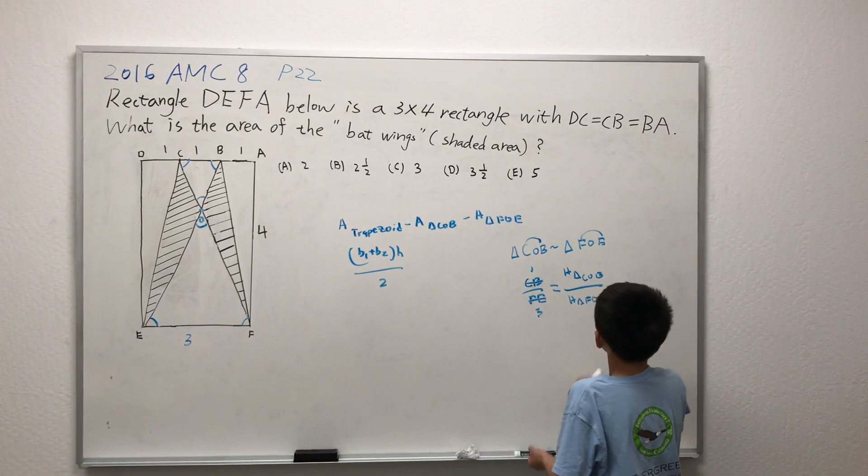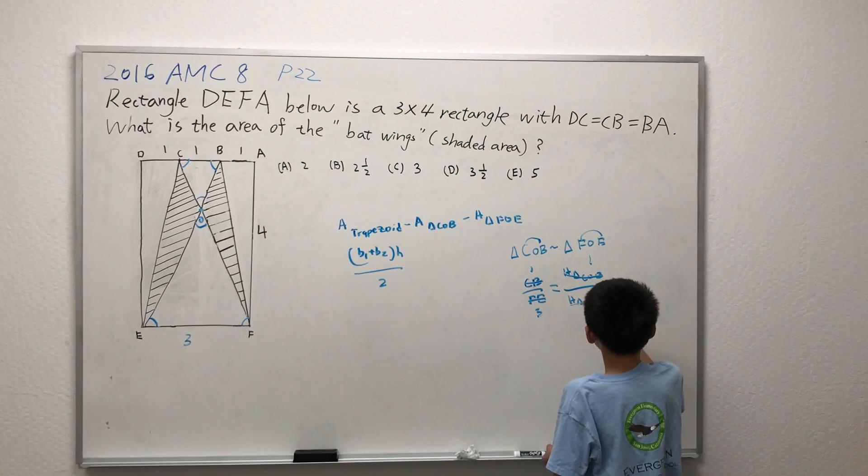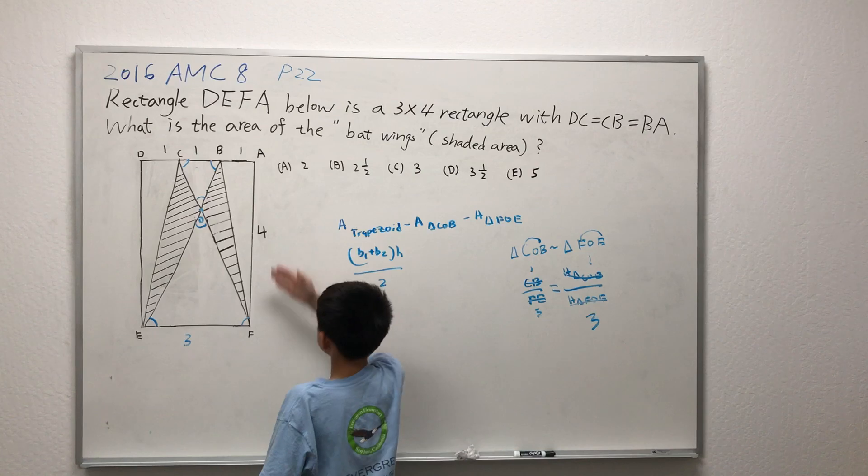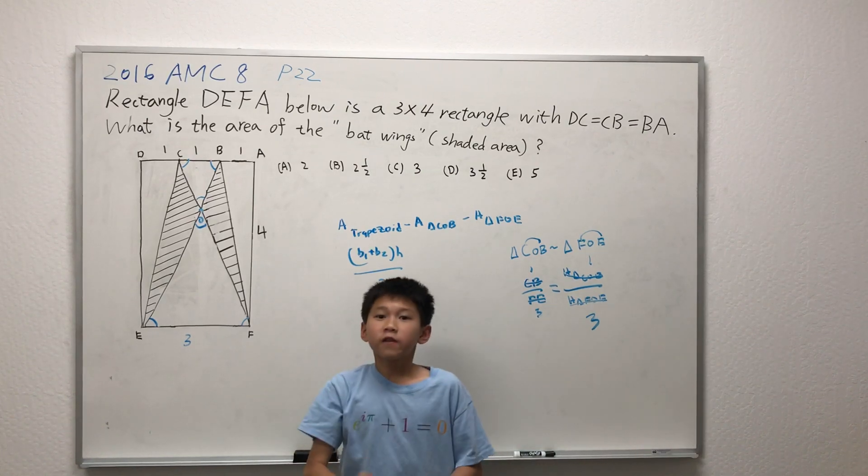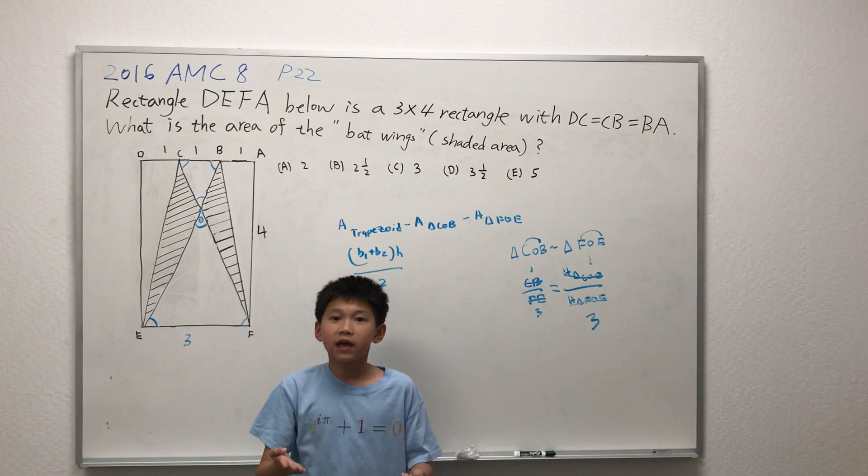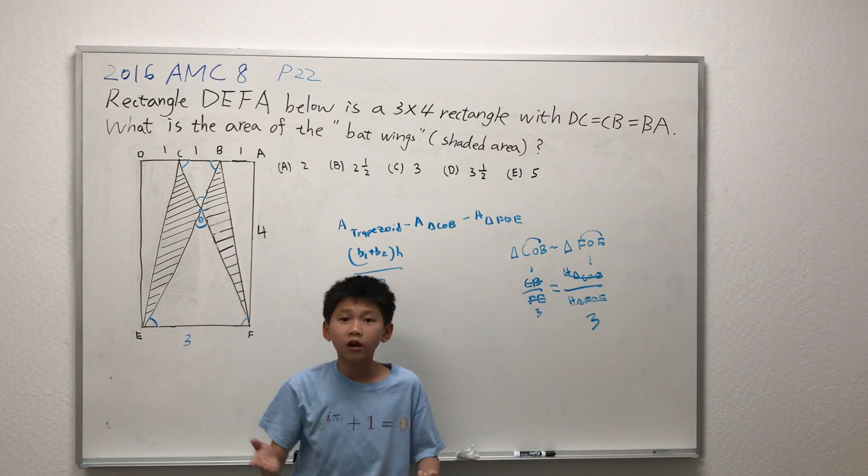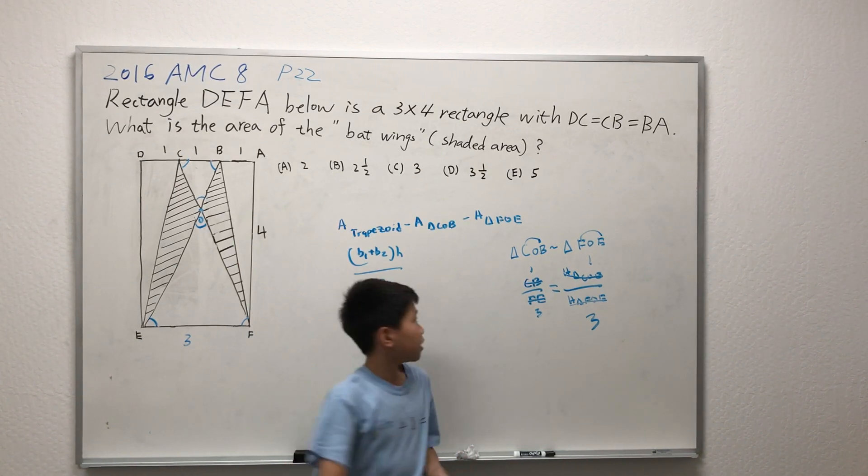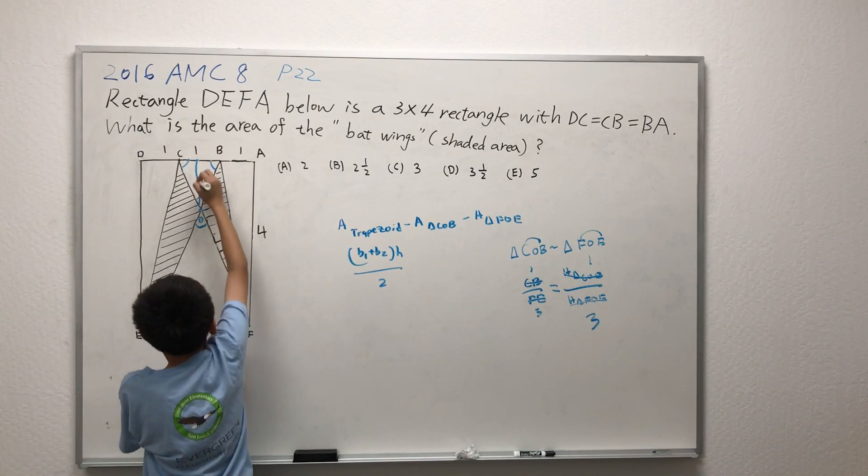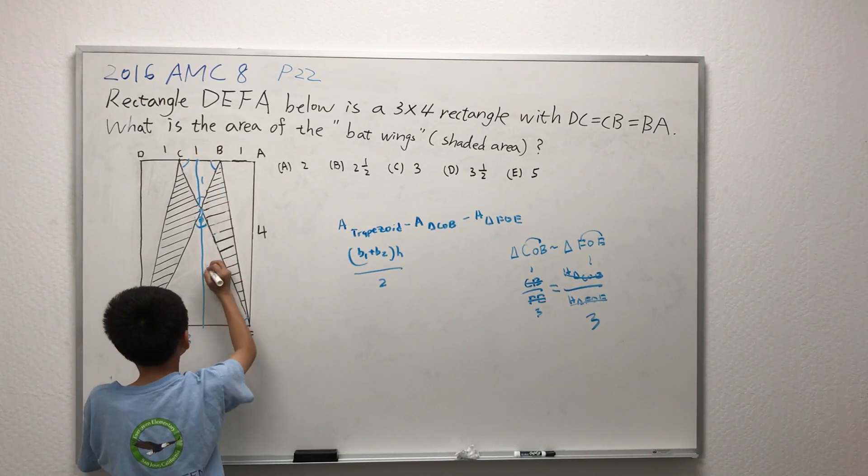So, that means the height of triangle COB must be 1 and the height of triangle FOE must be 3 to satisfy the property because AF is equal to 4. Therefore, the combined heights have to equal 4. And the only way to do that to keep the ratio of 1 to 3 is for the smaller height to be 1 and the longer height to be 3. Therefore, the height of triangle COB is 1 and the height of triangle FOE is 3.